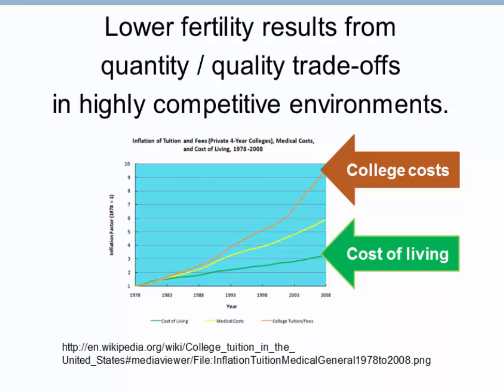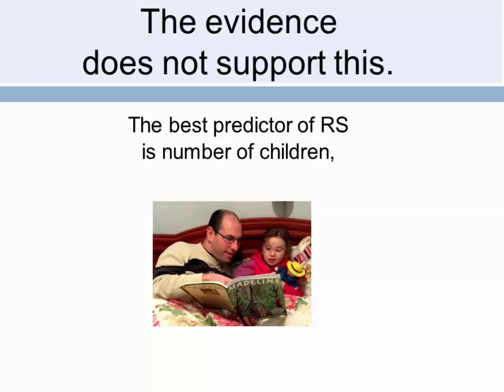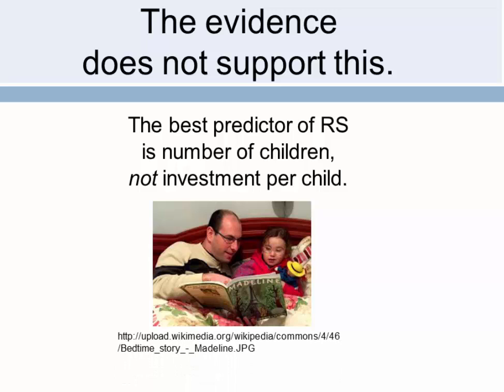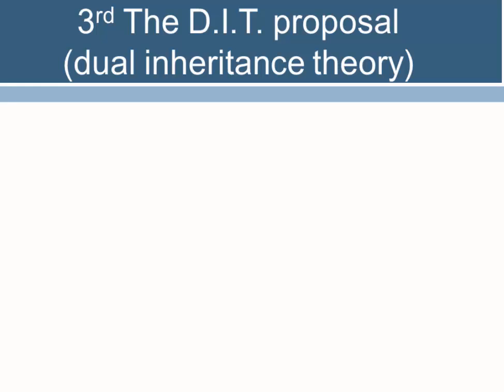The idea is that people are reducing their number of children and trading off quality against quantity in terms of their ability to invest in each child's success. But the evidence doesn't support this hypothesis either. The best predictor of reproductive success in industrial as well as pre-industrial societies is the number of children, not the investment made per child — if you want many grandchildren, the best strategy is to have many children, not to send them to college.